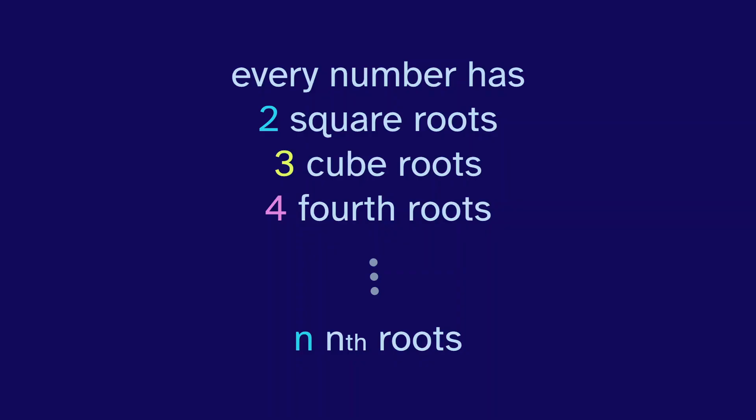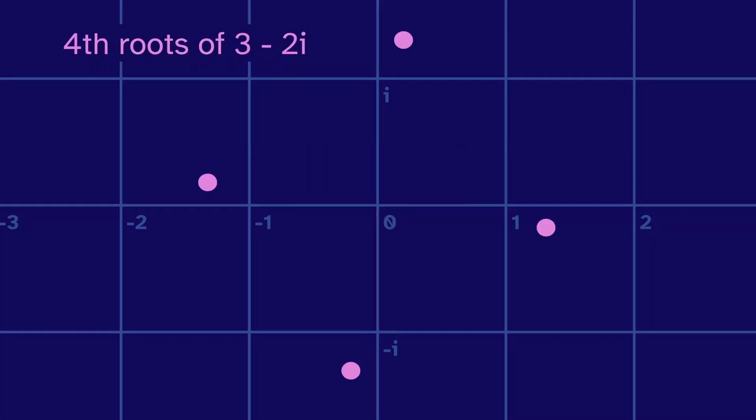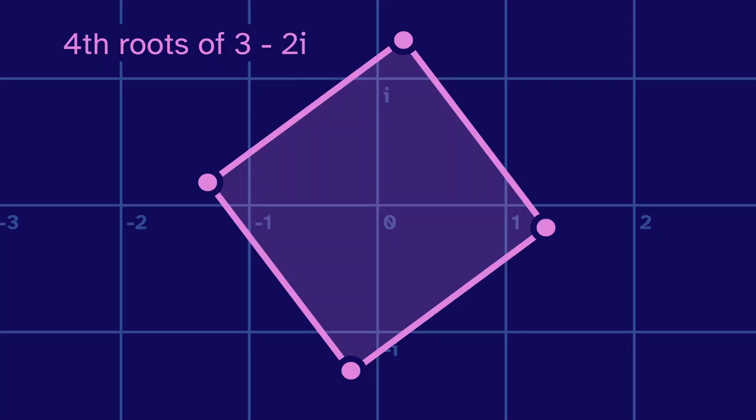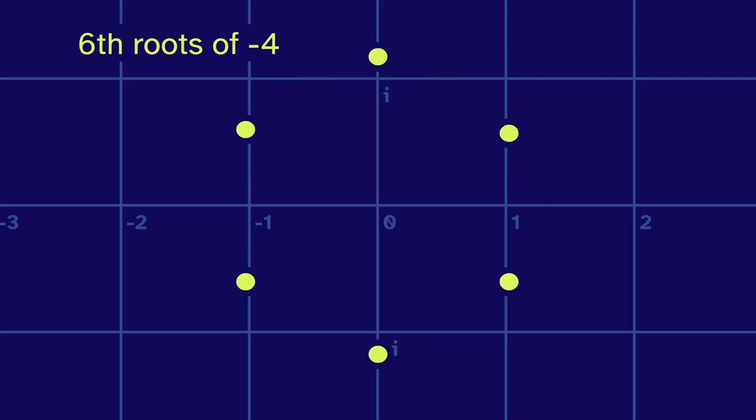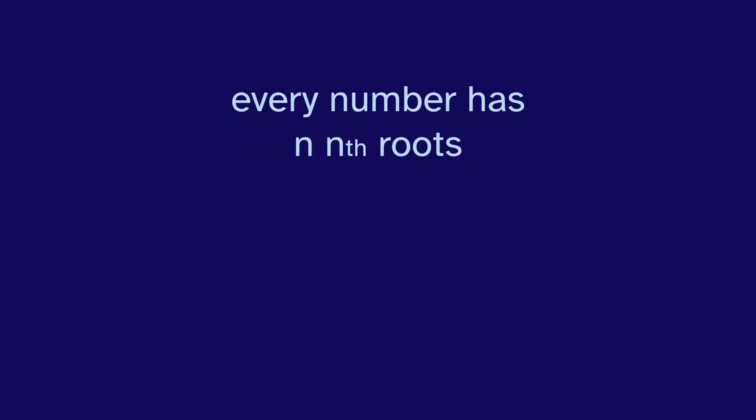And we can understand this better if we visualize. Here are the cube roots of i. They make an equilateral triangle. And here are the fourth roots of three minus two i. They make a square. And the sixth roots of negative four make a regular hexagon. And this also works in general. Every number has n nth roots, and those n nth roots form a regular n-gon. And there's a beautiful reason why this happens.